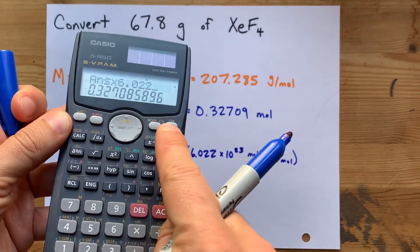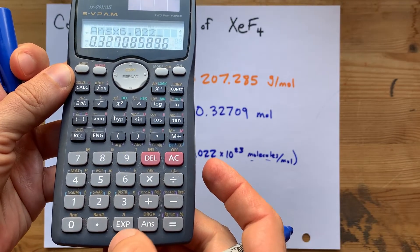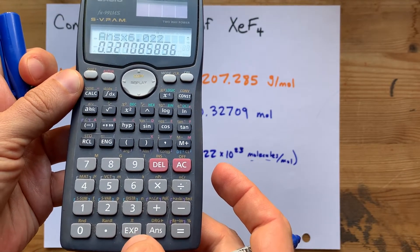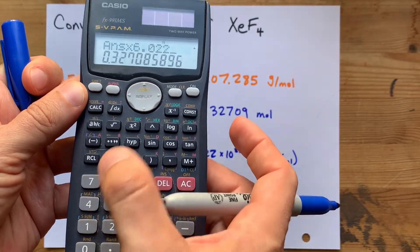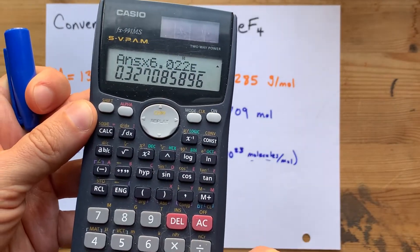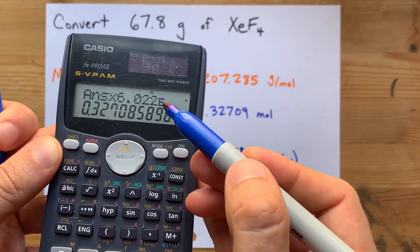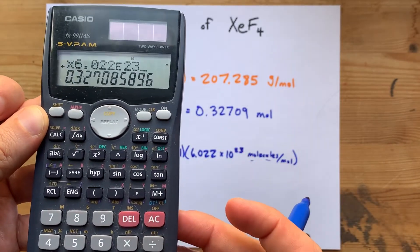Now, the way I write times 10 to the power of on my calculator is with this button, EXP. Yours might be capital E, or you can physically write times 10 to the power of. But this EXP button does that for me. This capital E means times 10 to the power of 23. There we go.